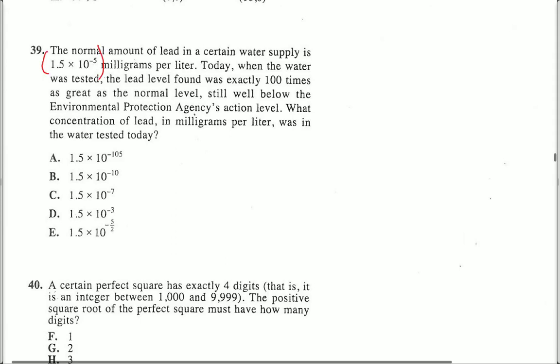First we have to find the normal amount of lead, 1.5 times 10 to the negative 5 milligrams per liter, and then multiply that by 100 times as much.